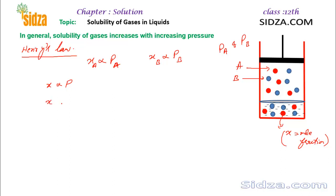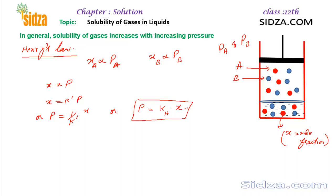Using the proportionality constant K', I can write X = K'·P, or the partial pressure of a gas equals (1/K')·X. I can also write it as: the partial pressure of a gas equals KH times X, where KH is called the Henry's constant, or Henry's law constant. This Henry's law constant is different for different gases, and even for the same gas it will be different at different temperatures.